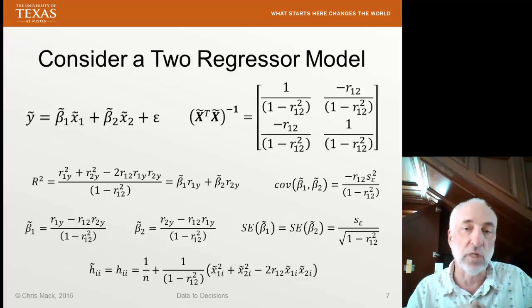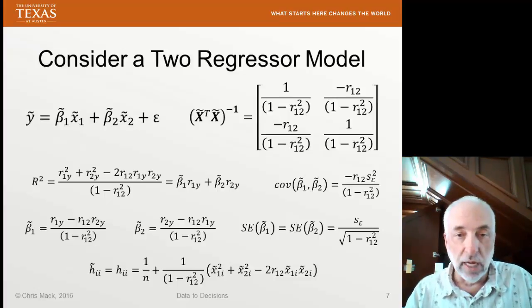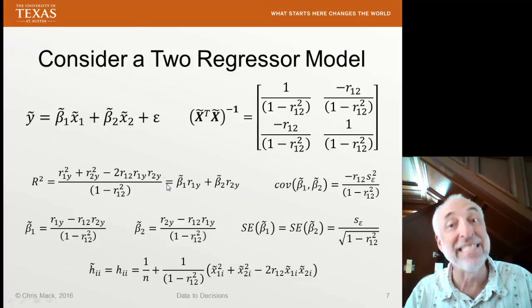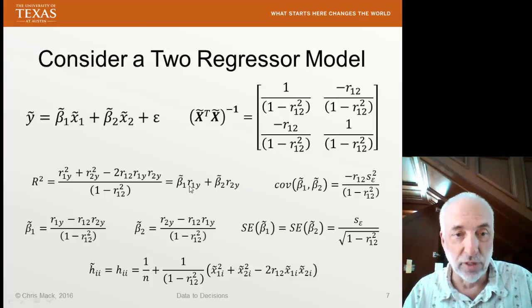We see that r squared is not a function of correlations 1 and 2, other than in the parameters beta 1 and beta 2. The beta 1 and beta 2 have the correlation of 1 with y, or the correlation with 2 with y. And then it subtracts off r12 times r2y, the other term.